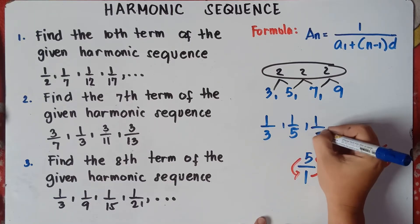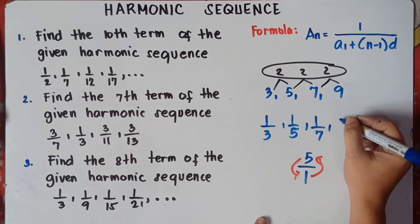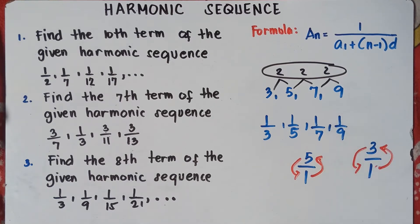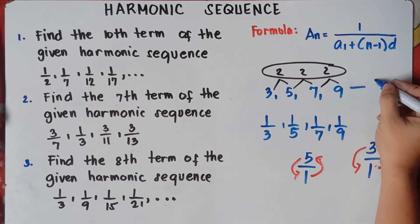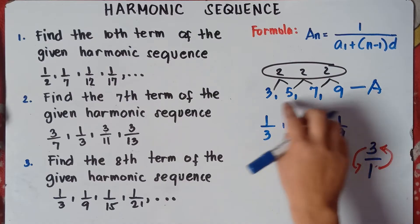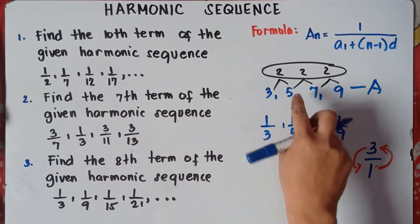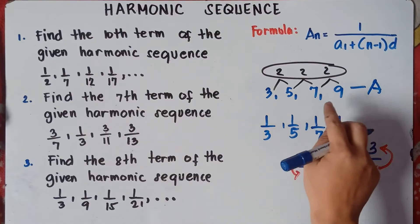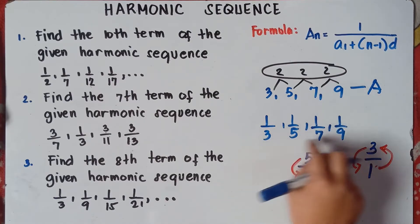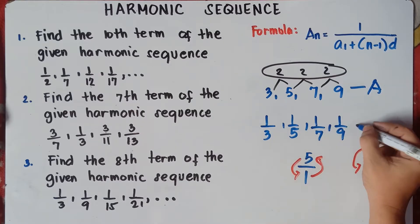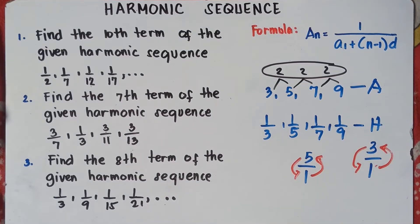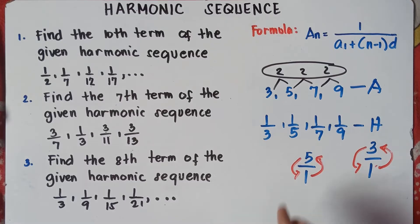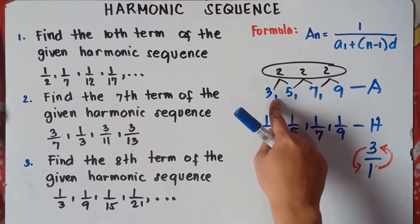Same with 7, that's 1 over 7. And for 9, that's 1 over 9. Therefore this is a harmonic sequence. To get the harmonic sequence of this given arithmetic sequence, just get the reciprocal and this will be your answer. The harmonic sequence is the reciprocal of the arithmetic sequence.